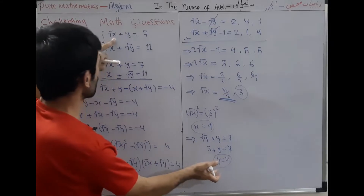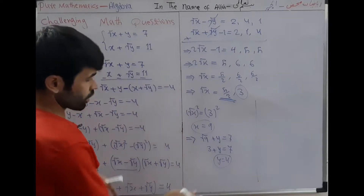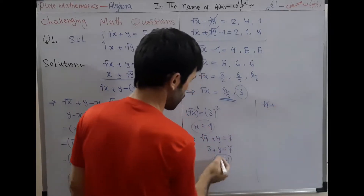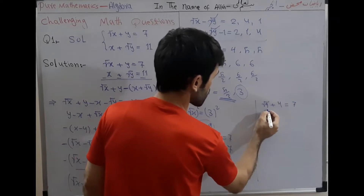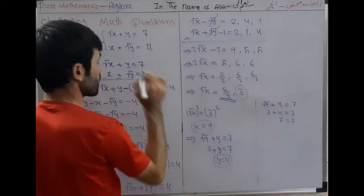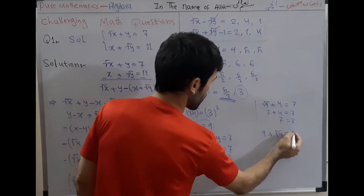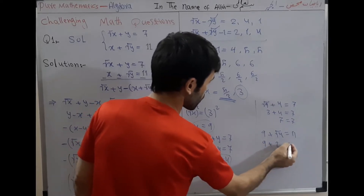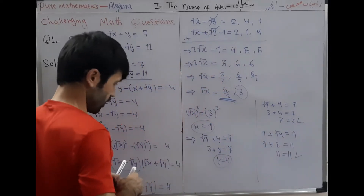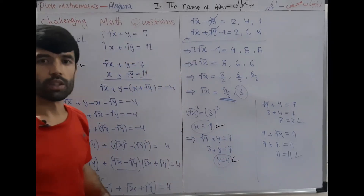We test both answers by substituting into the system. First equation: square root of 9 plus 4 equals 3 plus 4 equals 7. Correct. Second equation: 9 plus square root of 4 equals 9 plus 2 equals 11. Correct. Both answers x equals 9 and y equals 4 are verified as the solution to this system of equations. Thank you.